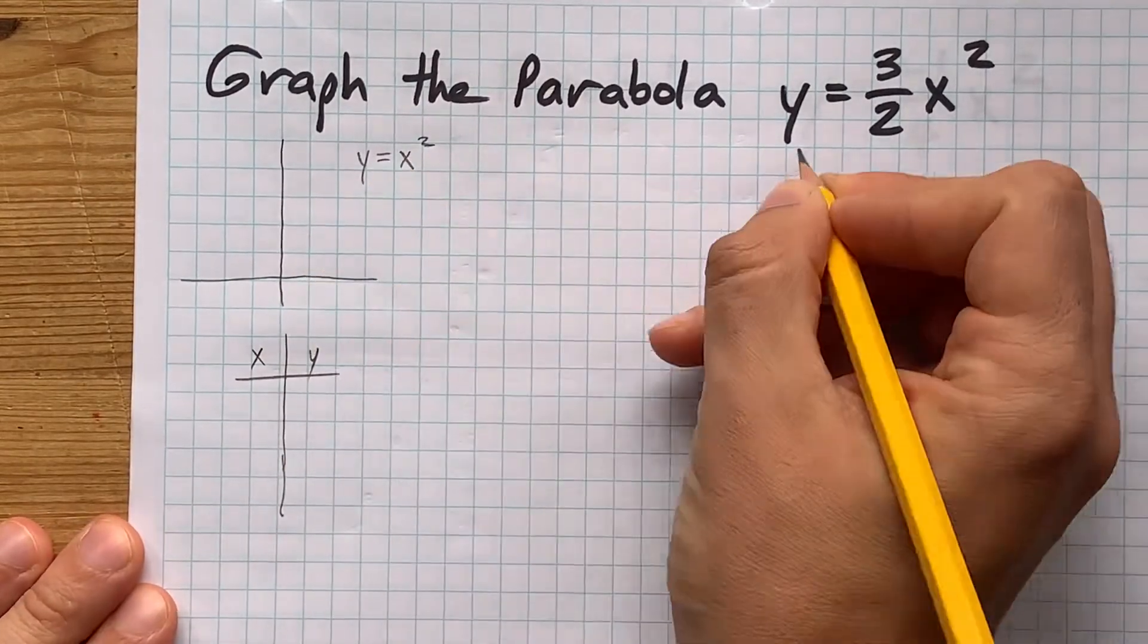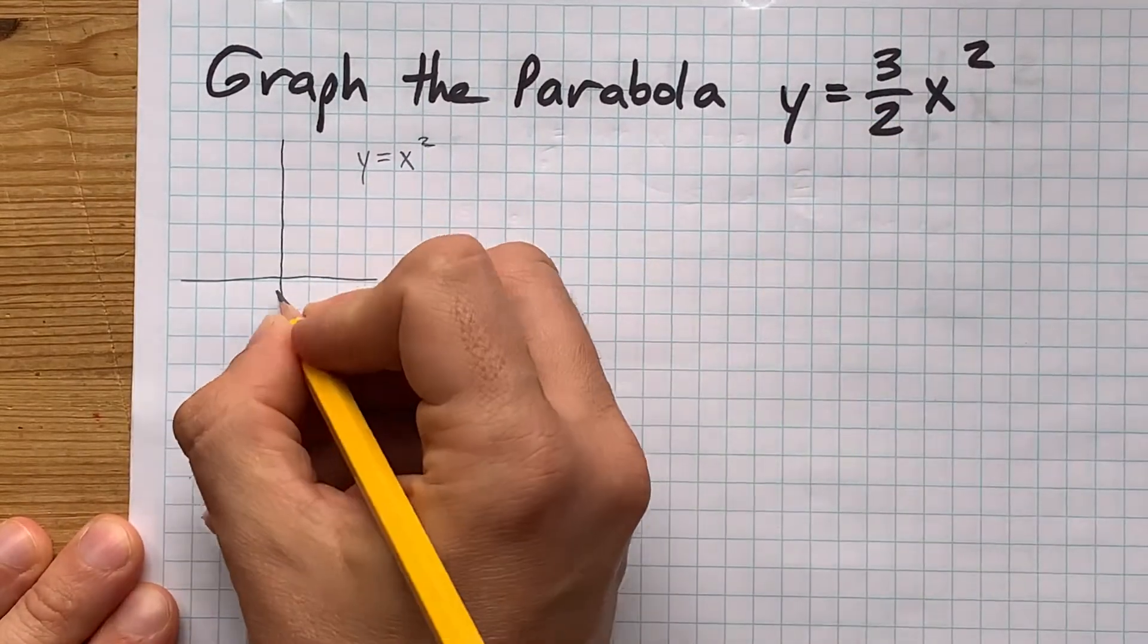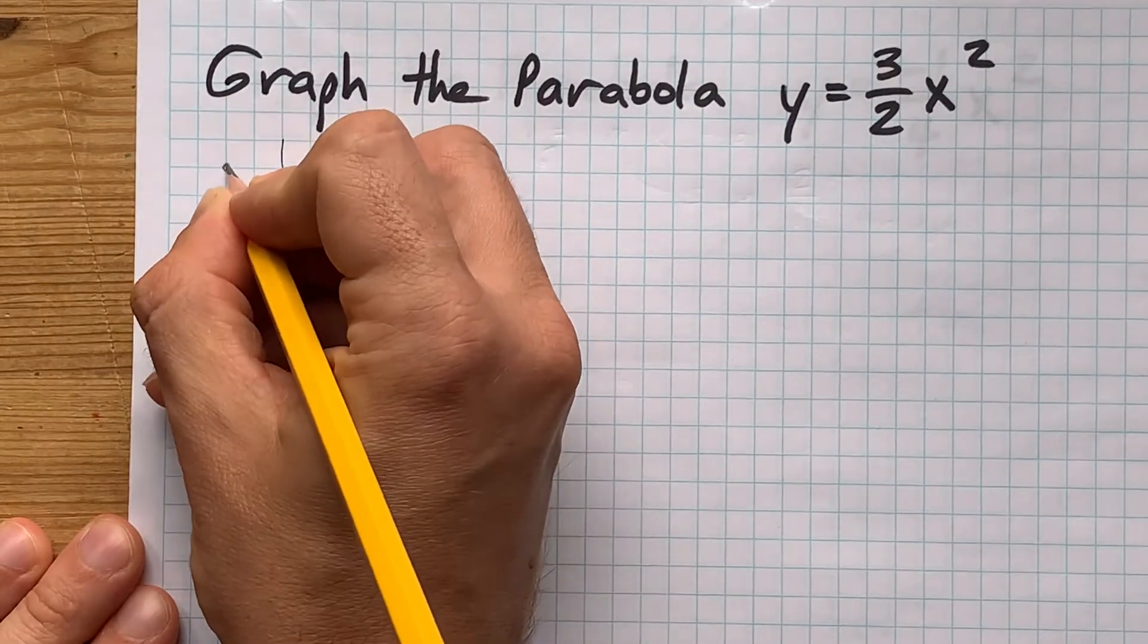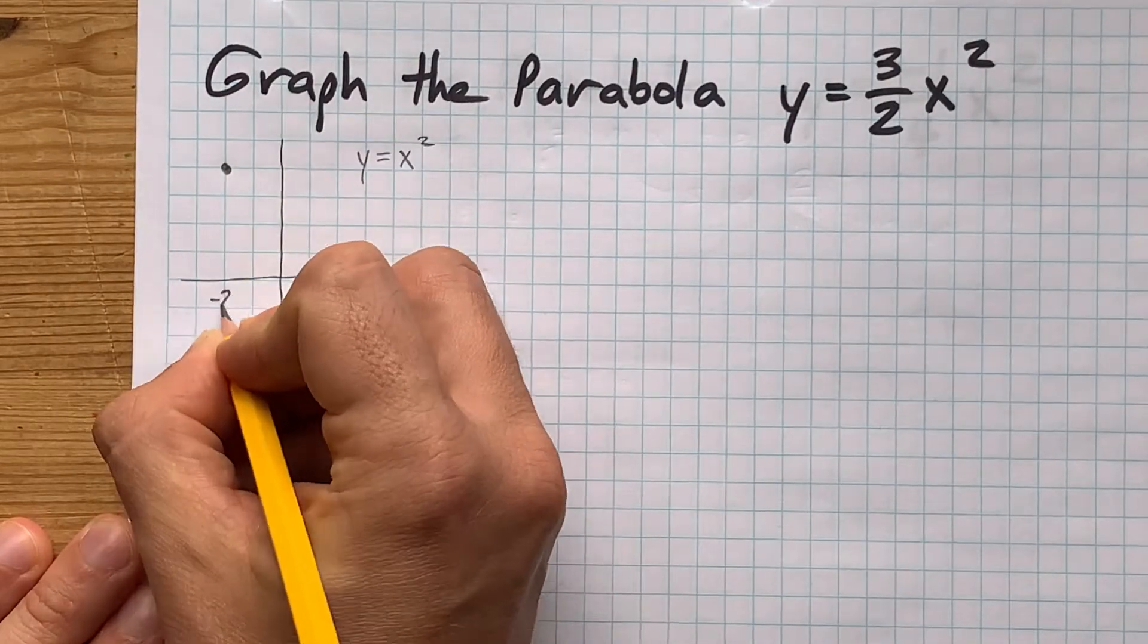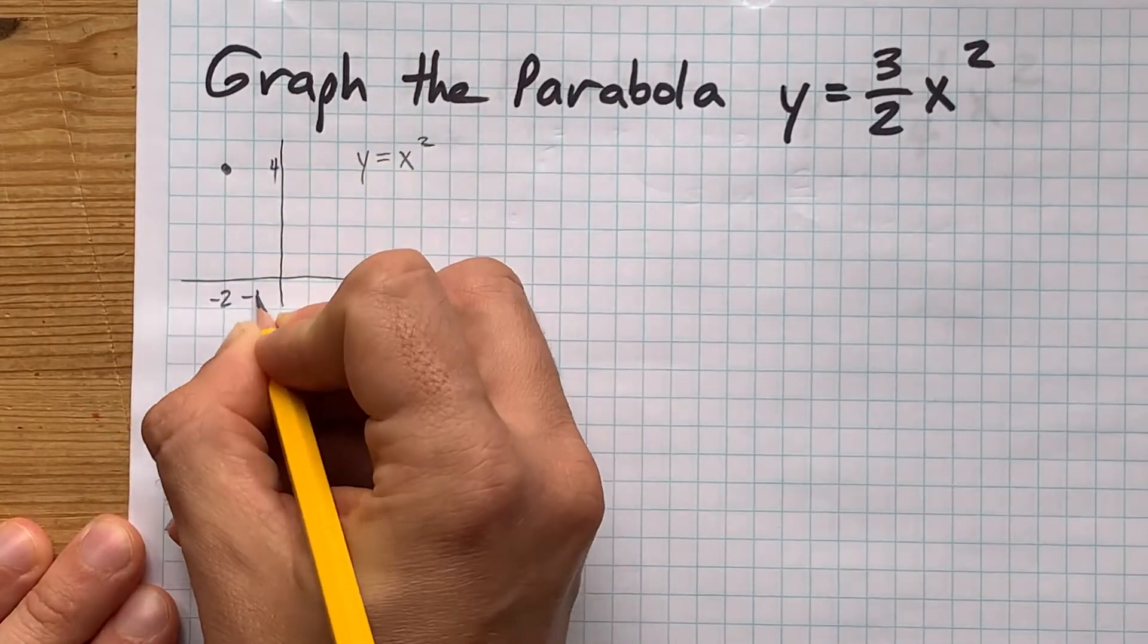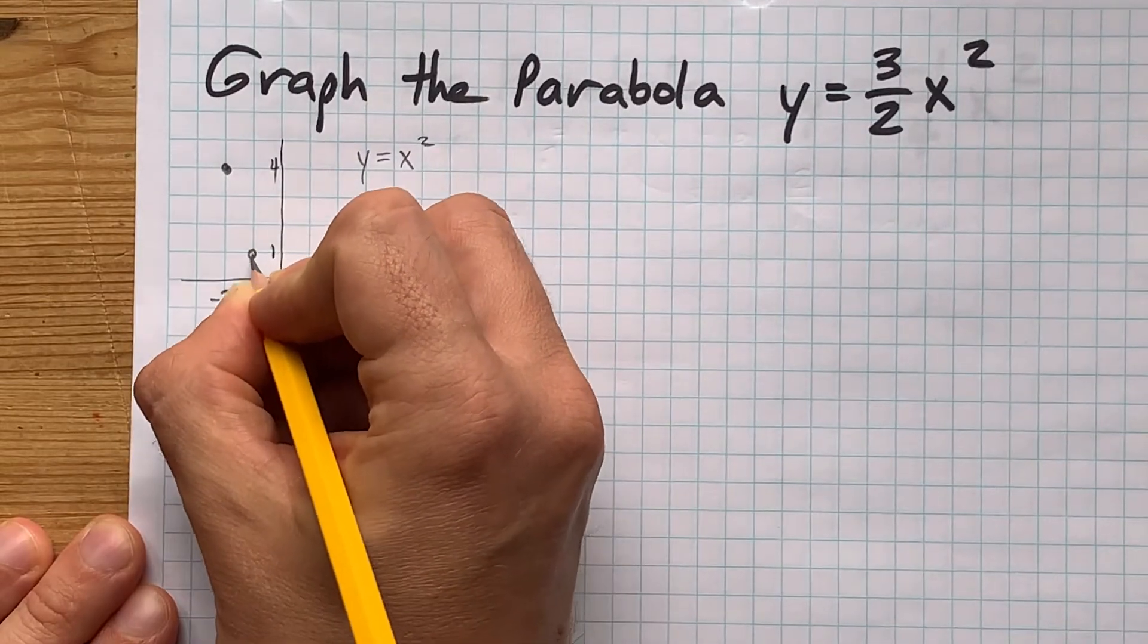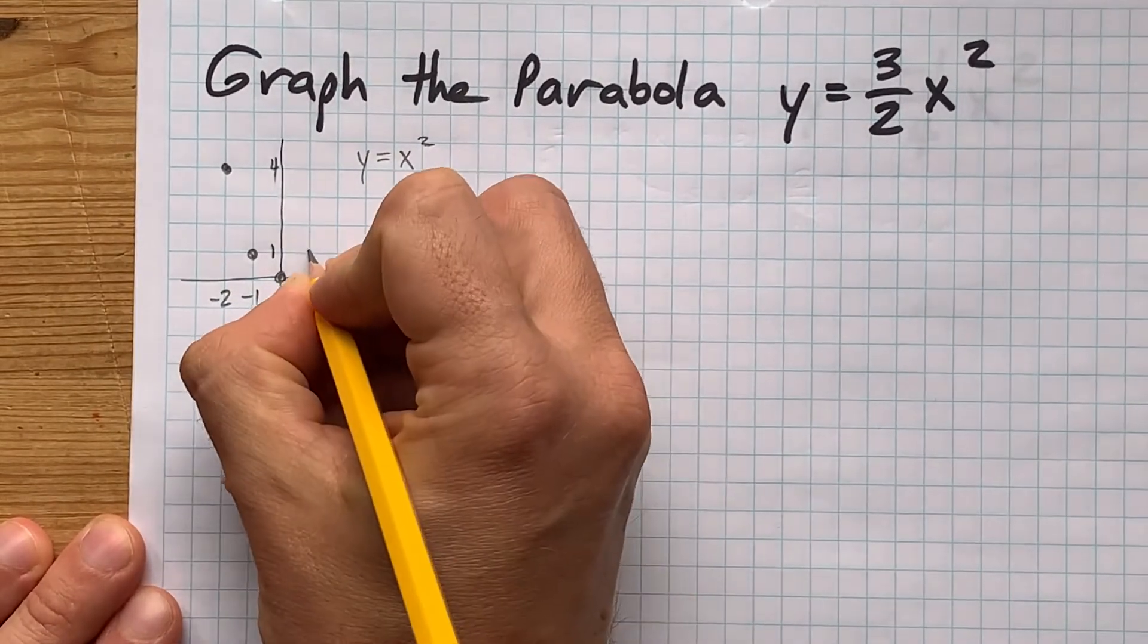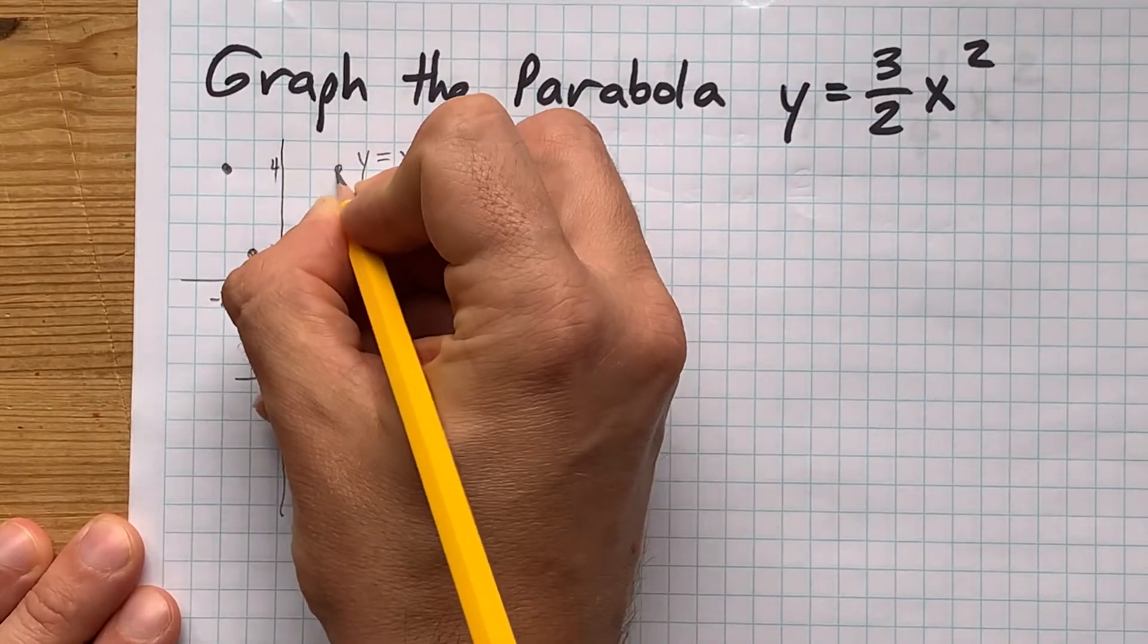The graph y equals x squared, that's without the 3 halves in front of it, goes through negative 2 comma 4, negative 1 comma 1, 0 comma 0, 1 comma 1, and 2 comma 4.